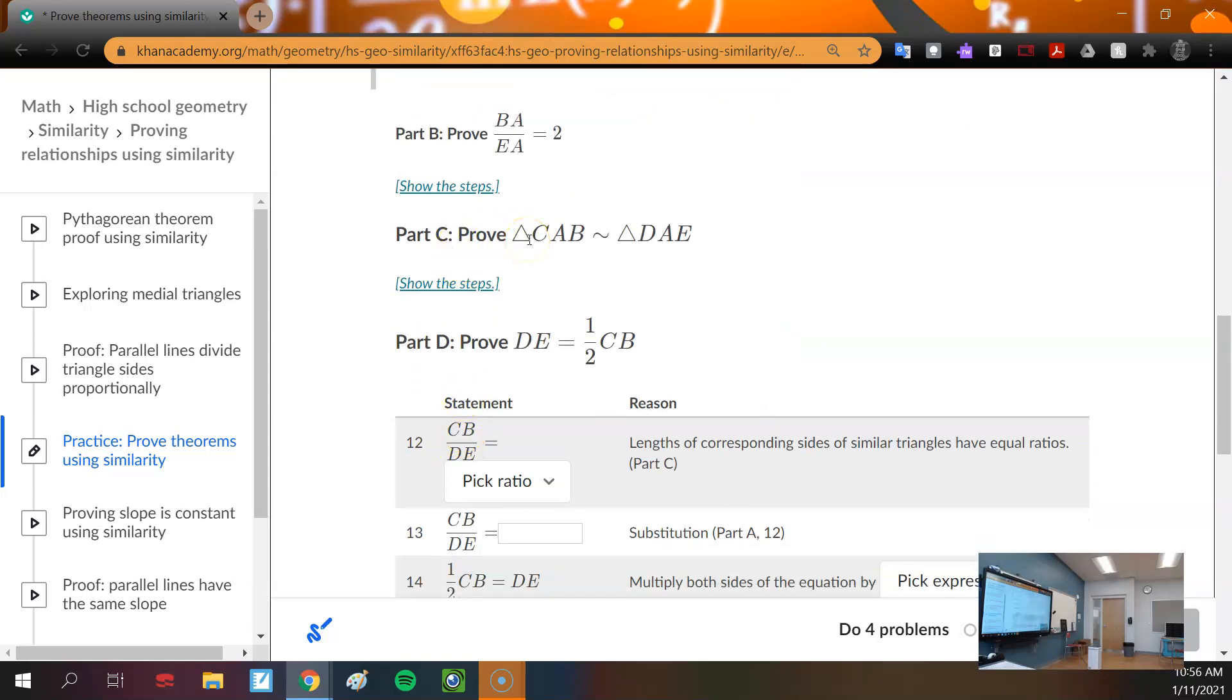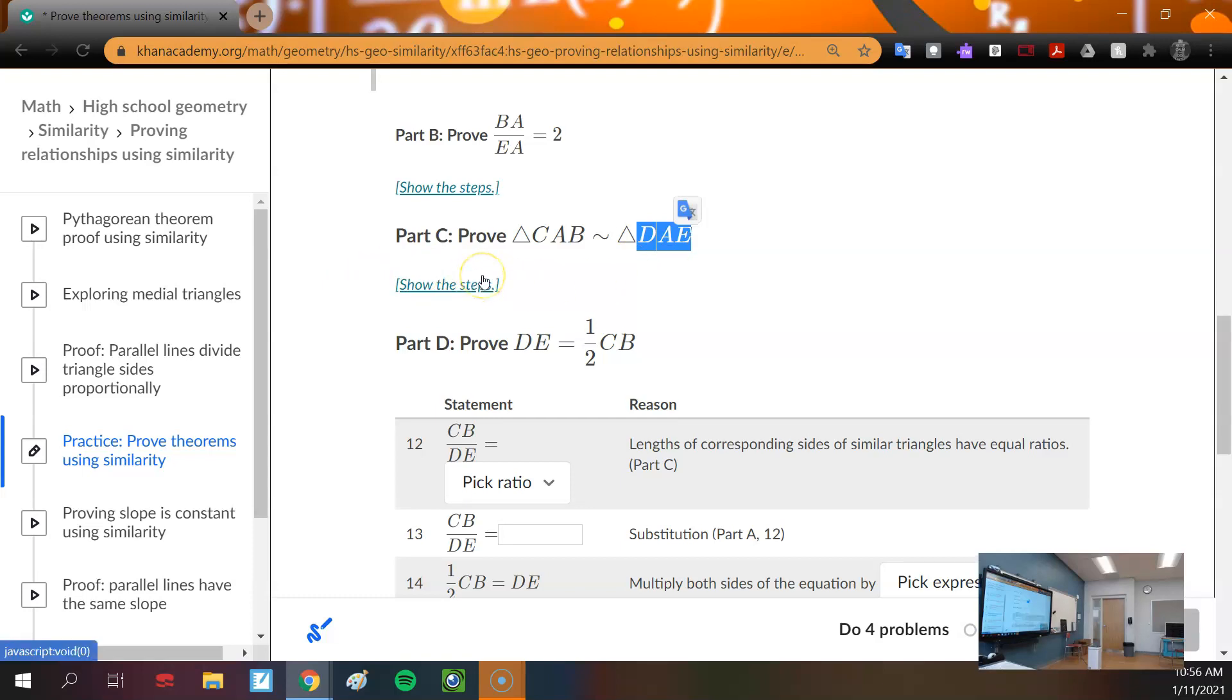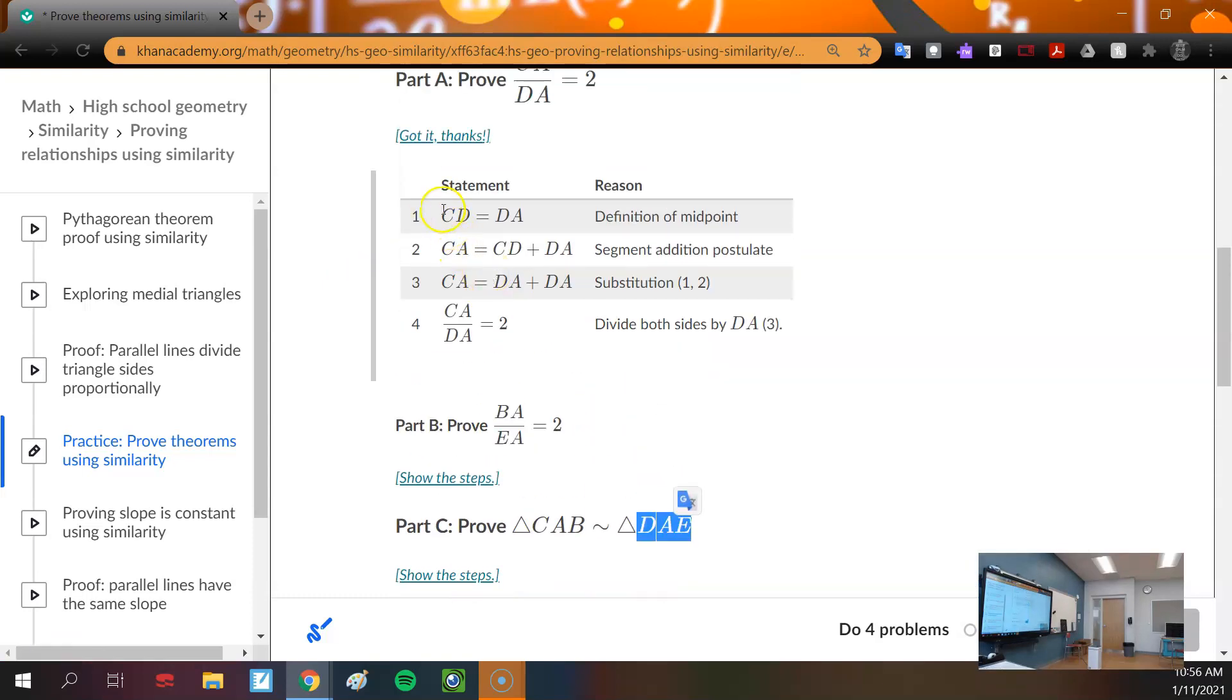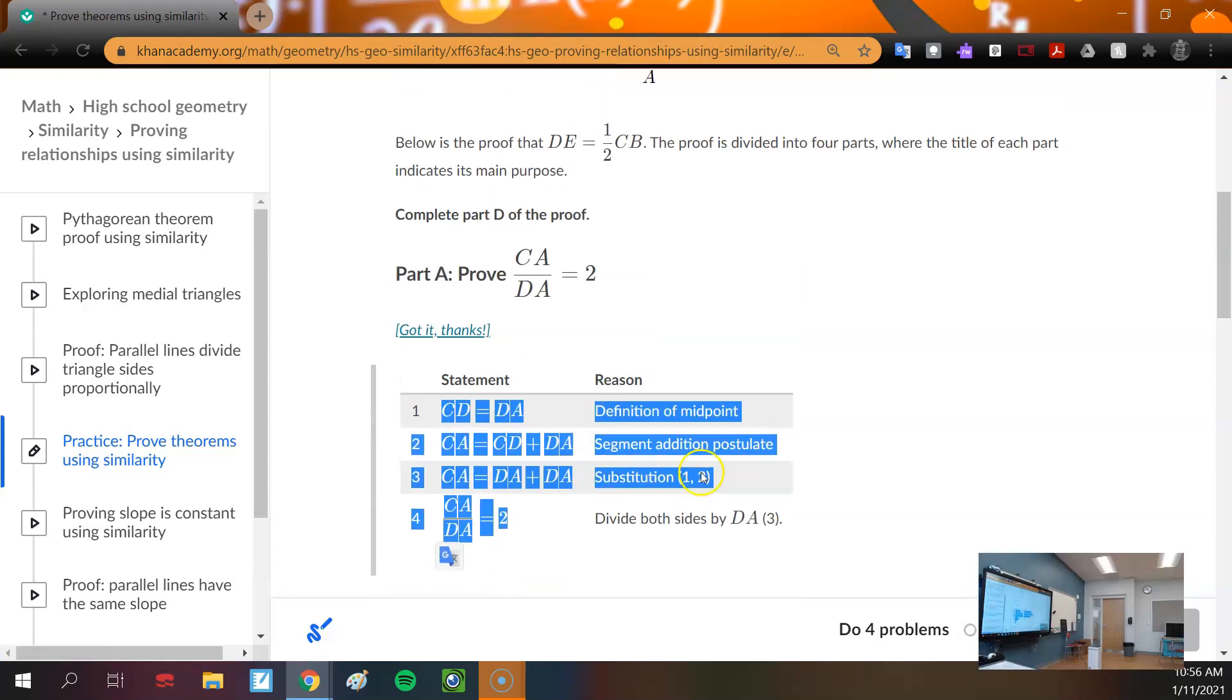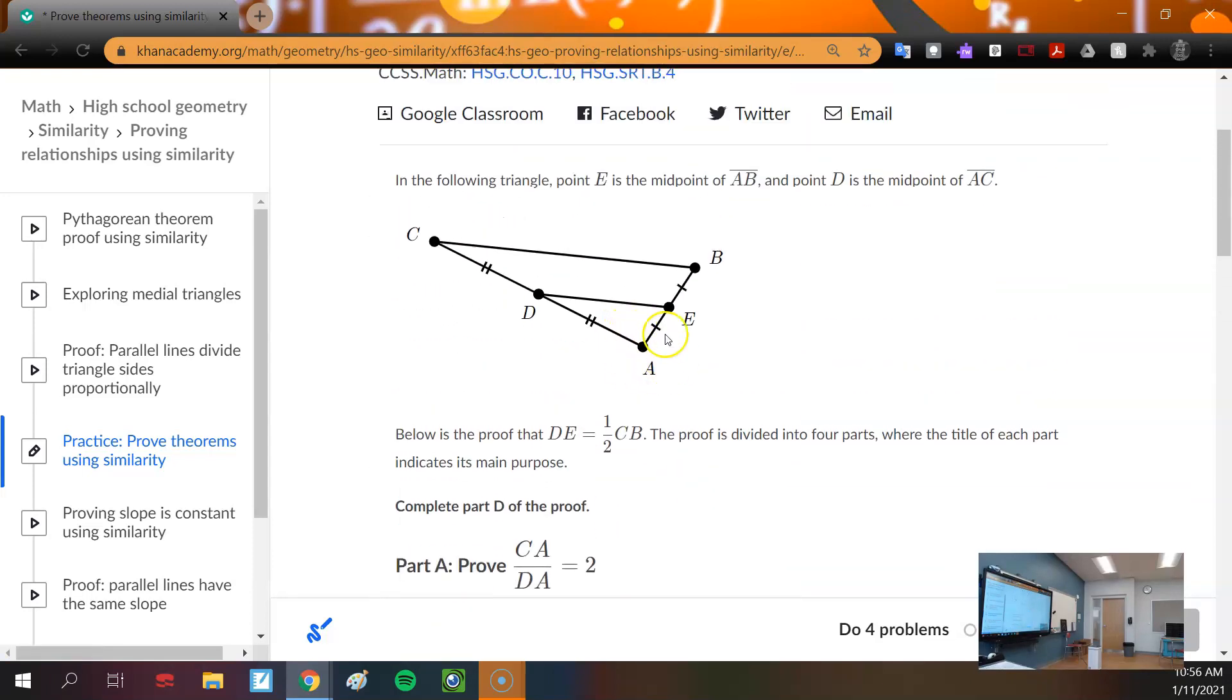Part C is then prove that triangle CAB is similar to triangle DAE. Well, we know that because side, angle, side. Now, I'm going to show you the steps in a second. You guys think about it. We prove that these sides have a common ratio of 2. We prove that these sides have a common ratio of 2, and they share angle A. So through side, angle, side similarity, we know that the triangles are similar.